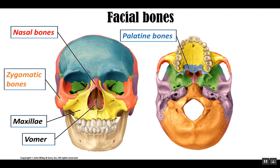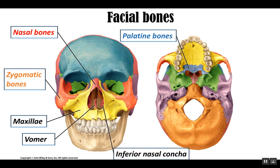The vomer forms the inferior portion of the nasal septum. There is one vomer. It is often referred to as a plow-shaped bone — that's what vomer means, plow-shaped. This is a very difficult bone to get the whole shape from this view, so we will see it again when we look at the nasal septum. The inferior nasal concha — remember we learned about the superior and middle nasal concha, but the inferior nasal concha are separate bones that provide the increased surface area we see in the nasal cavity.